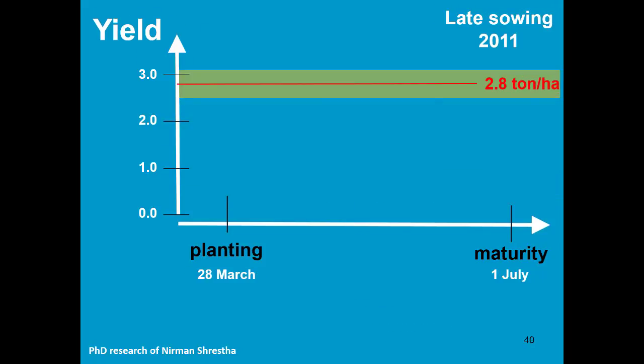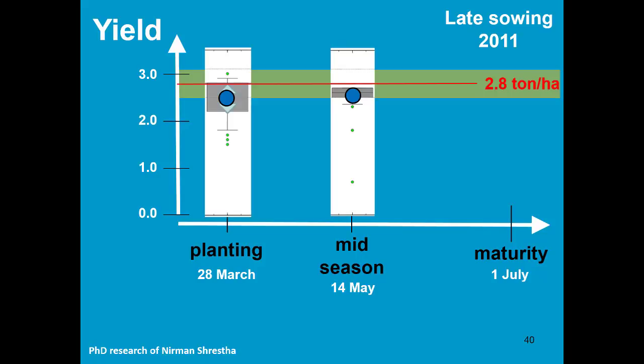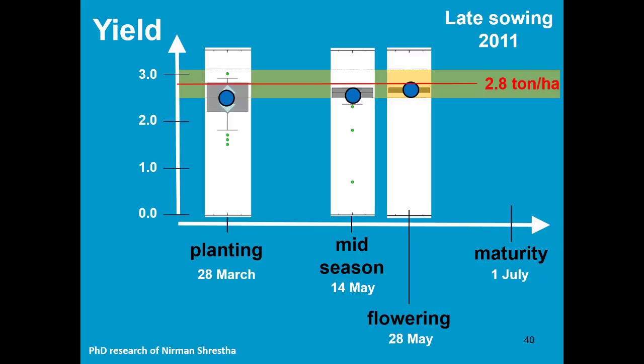Here we see another example for a late sowing for the year 2011. The crop was planted on the 28th of March and maturity was reached on the 1st of July. The observed yield was much higher — 2.8 tonne. At the moment of planting, already the yield forecast is within the range. As the season progresses, the forecast becomes closer and closer to the observed data, and at flowering, we are already within the standard deviation of the observed yield.